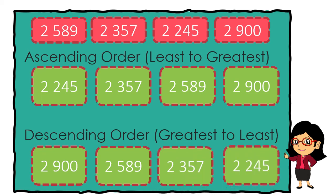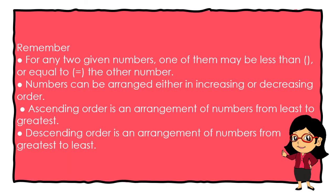And 2,245. We need to remember that for any two given numbers, one of them may be less than, greater than, or equal to the other number. Numbers can also be arranged either in increasing or decreasing order. Ascending order is an arrangement of numbers from least to greatest. Descending order is an arrangement of numbers from greatest to least.